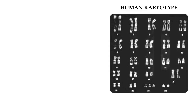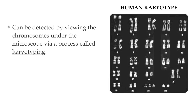We can detect or diagnose chromosomal abnormalities by taking a photograph of the chromosomes when viewed under a microscope, and then arranging the autosomal chromosomes in their homologous pairs from the longest to the shortest, numbering them from 1 to 22, and then placing the sex chromosomes — the X and Y chromosomes — last. This arrangement is called a karyotype, and a karyotype can help us check for chromosomal abnormalities.